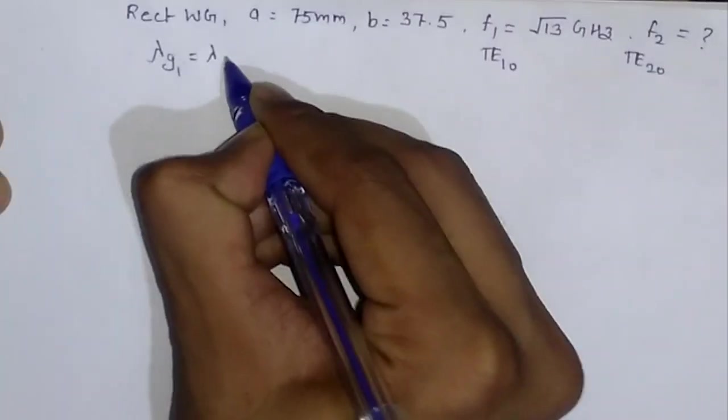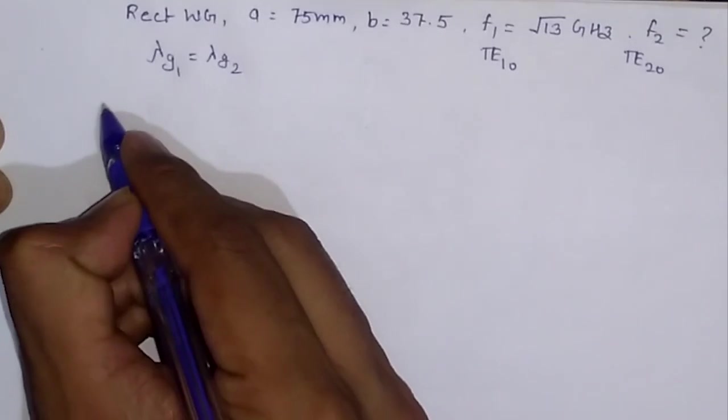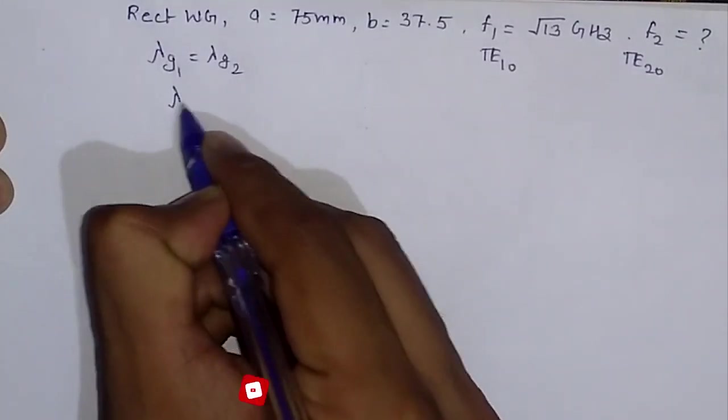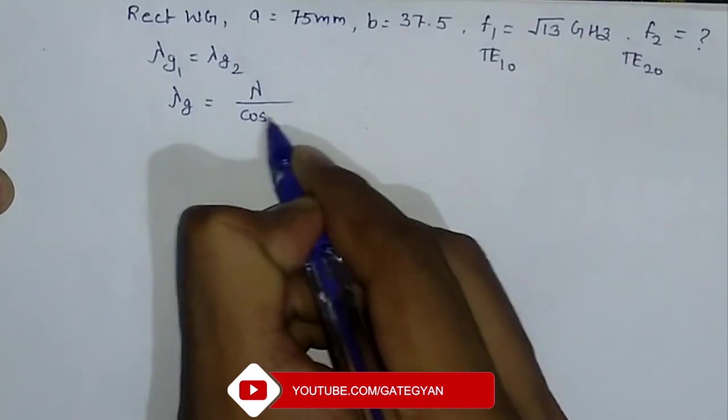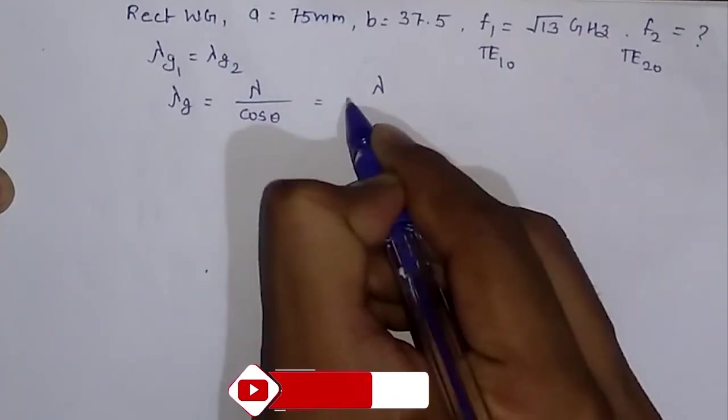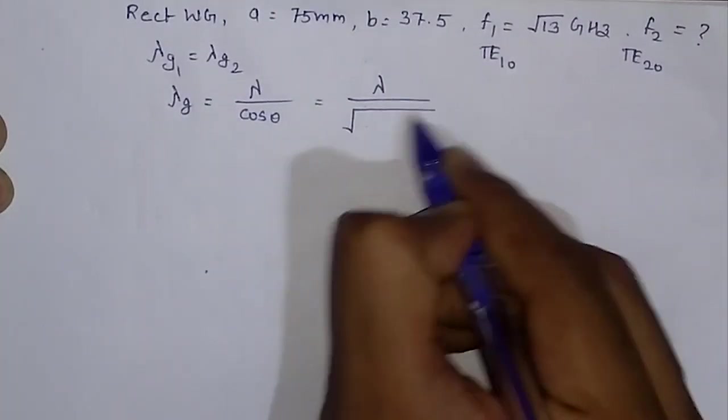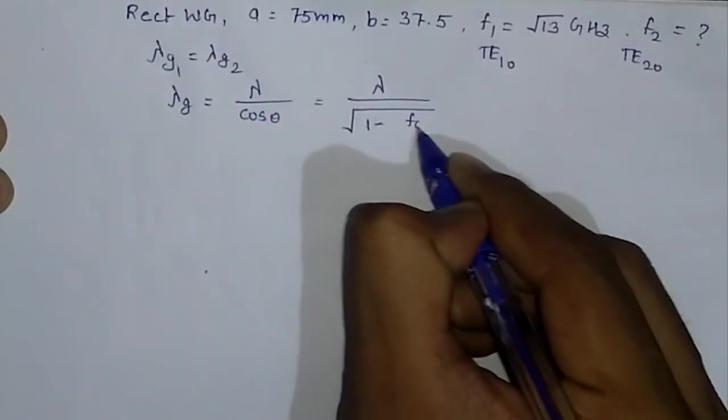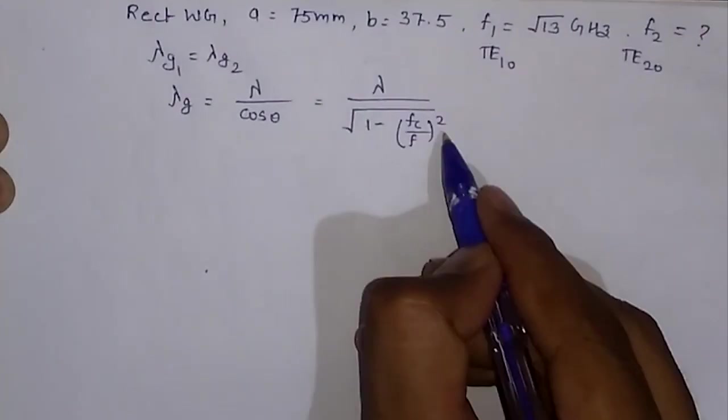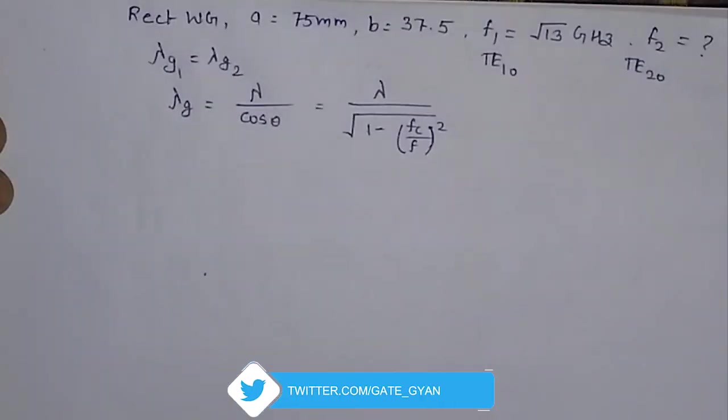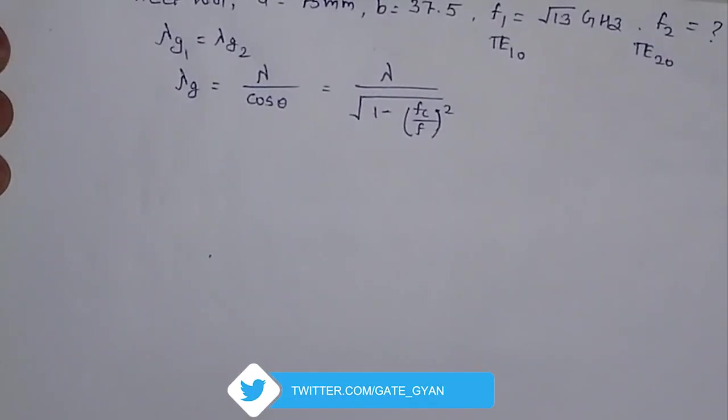Lambda G1 is equal to lambda G2. So first of all, let us write what is the guide wavelength lambda G. Lambda G is given as lambda divided by cos theta, or you can write it as lambda divided by square root of 1 minus FC upon F whole square. So this is your formula for guide wavelength lambda G.